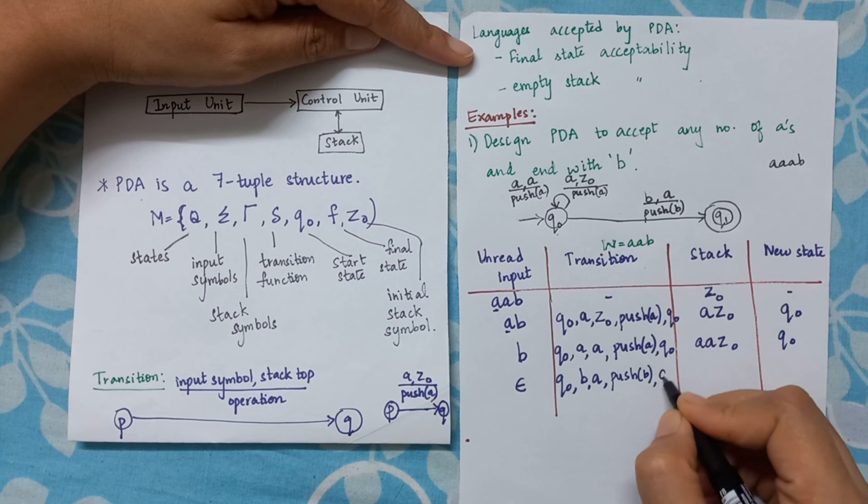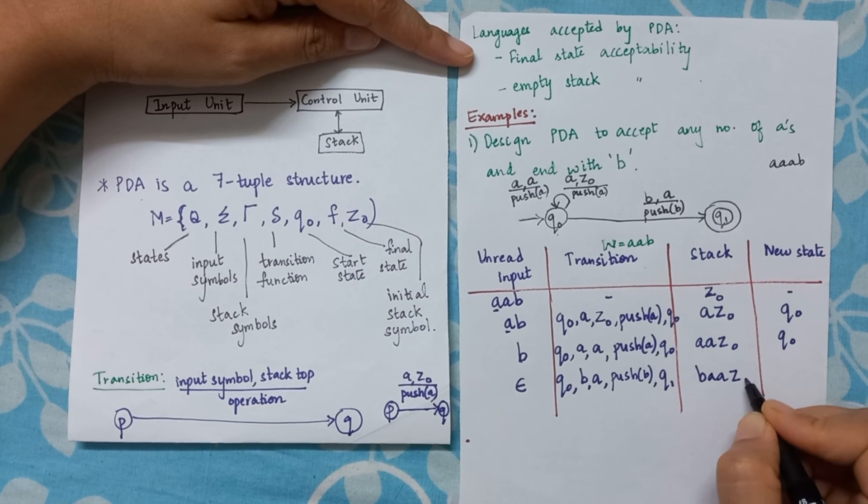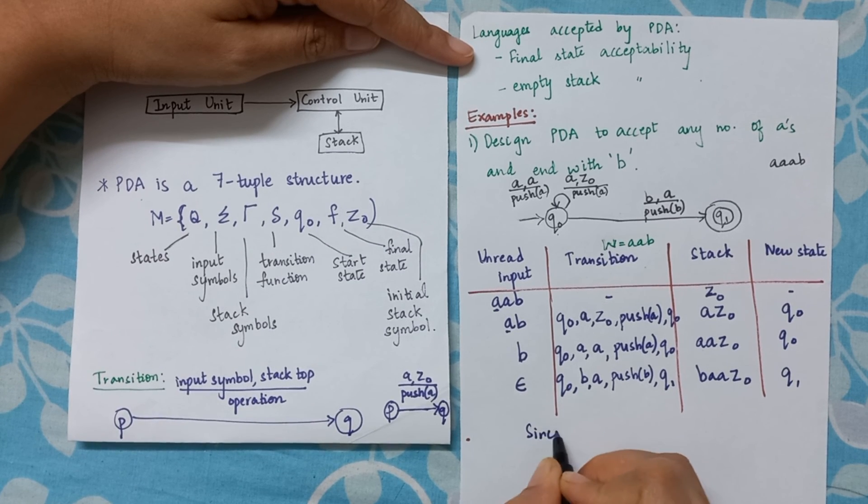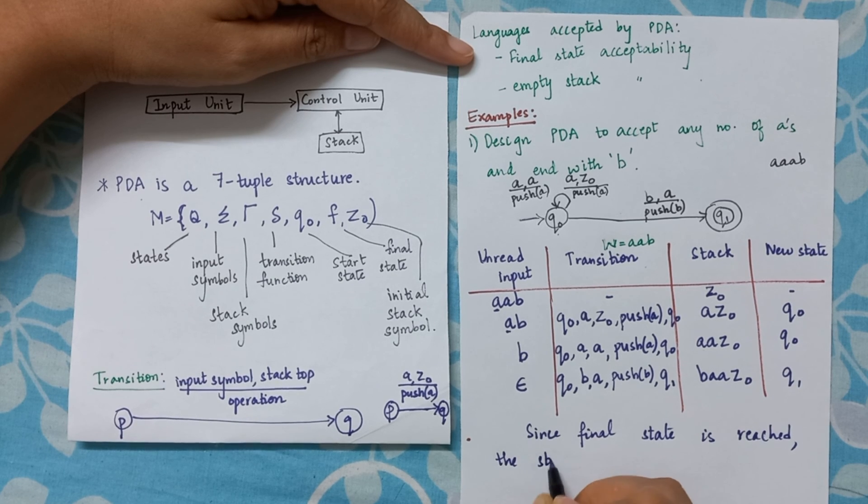Which state do I reach? I reach q1. What will be on the stack? b, a, a, Z0. Which state do I reach? q1. Since final state is reached, the string is accepted by PDA.